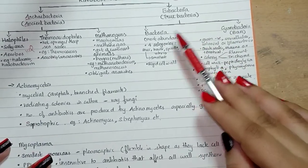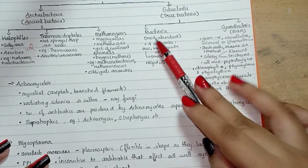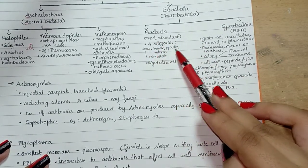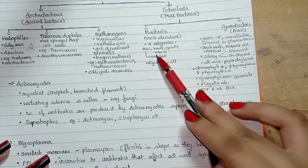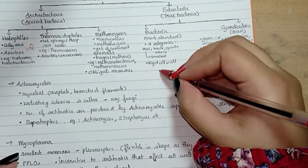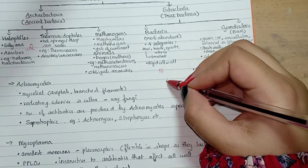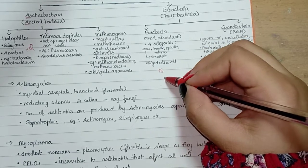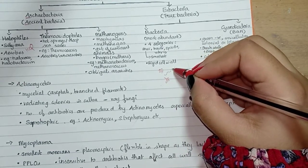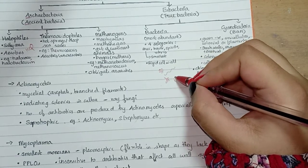First is bacteria, which is the most abundant. There are four categories of bacteria: cocci, bacilli, spirilla, and vibrio. Cocci are round-shaped, bacilli are rod-shaped, spirilla are spiral-shaped, and vibrio are comma-shaped.